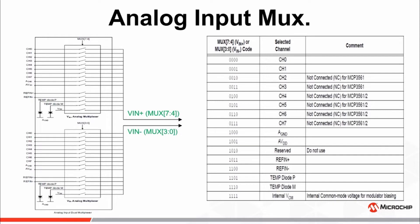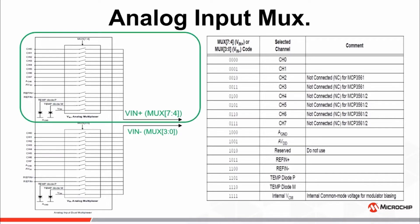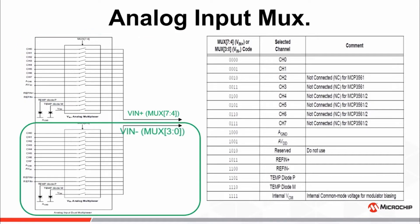The first topic of discussion will be regarding the various analog input channels, which can be sampled via two input multiplexers. One input multiplexer is for the non-inverting or positive ADC input VIN+, while the other is for the inverting or negative ADC input VIN-. Since the ADC is designed to perform differential measurements only, single-ended measurements can be made by setting the MUX3-0 bits to A ground, while the MUX7-4 bits are set to any of the other various input channel options.